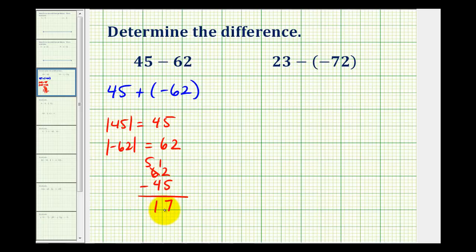The difference is 17, but since the negative number had the larger absolute value, the sum is actually negative 17. Therefore, this difference is also negative 17.